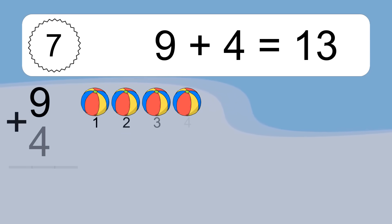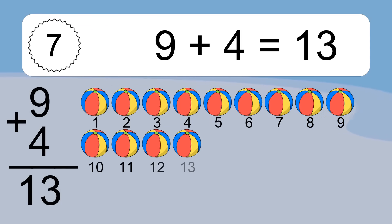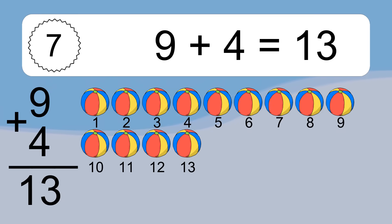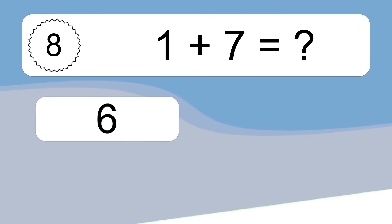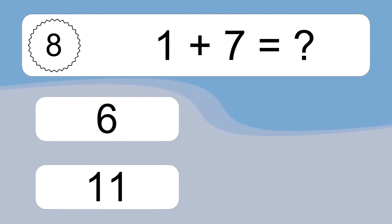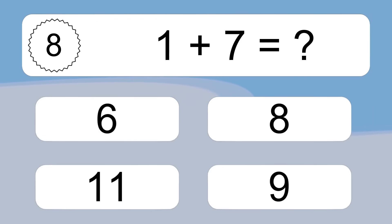9 plus 4 equals what? 9 plus 4 equals 13. Let's count it: 1, 2, 3, 4, 5, 6, 7, 8, 9, 10, 11, 12, 13.